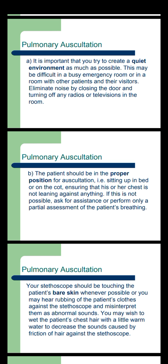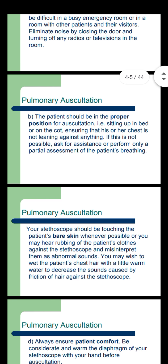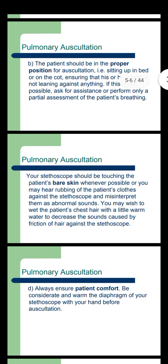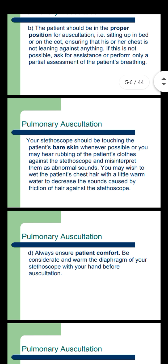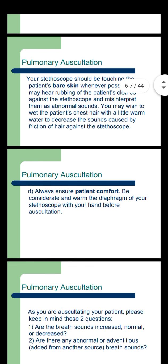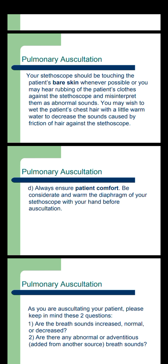The patient should be sitting upright in a bed or on the cot, ensuring that his or her chest is not leaning against anything. If this is not possible, ask for assistance or perform only a partial assessment of the patient's breathing. Your stethoscope should be touching the patient's bare skin whenever possible, or you may hear rubbing of the patient's clothes against the stethoscope and may misinterpret them as abnormal sound. You may wish to wet the patient's chest hair with a little warm water to decrease the sound caused by friction of the hair against the stethoscope. Always ensure patient comfort; be considerate and warm the diaphragm of your stethoscope with your hand before auscultation.